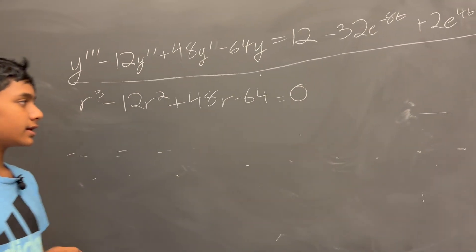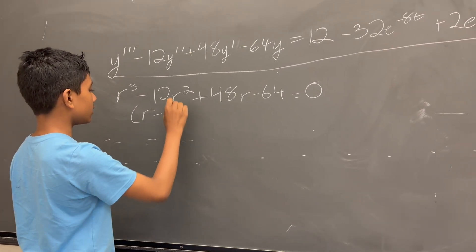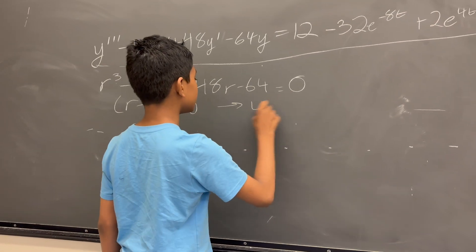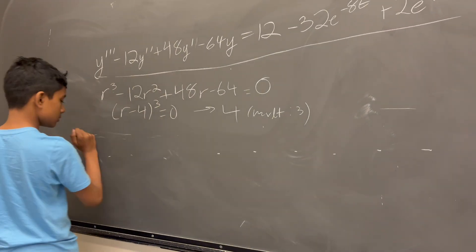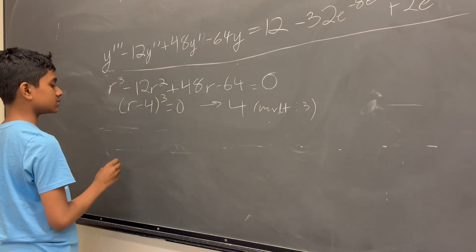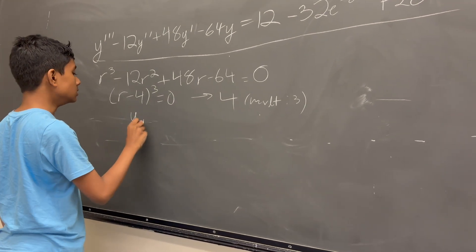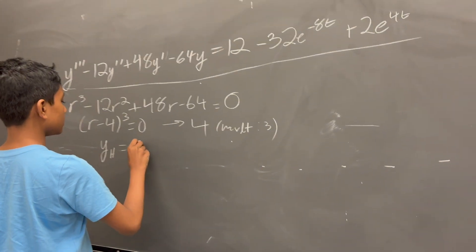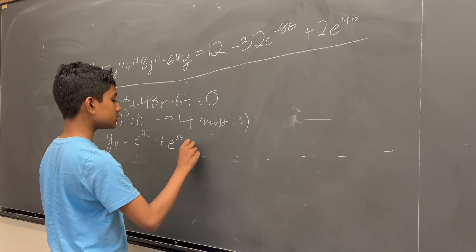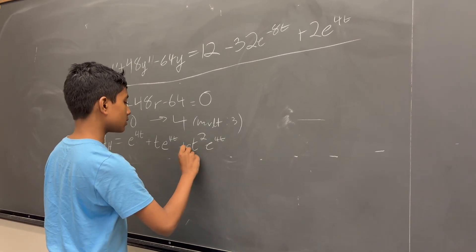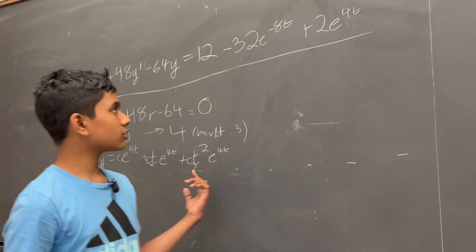So this is our characteristic equation. Alright, so now what do we do with this? Well, turns out, this can be factorized very quickly, and that means we just have one root with a multiplicity of three. Which means that our homogeneous solution is going to be, or our complementary solution, as some would call it. This is just going to be e to the 4t plus t e to the 4t plus t squared e to the 4t, of course, with some coefficients. So that's our homogeneous solution.